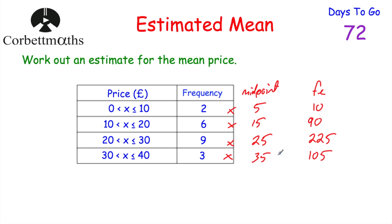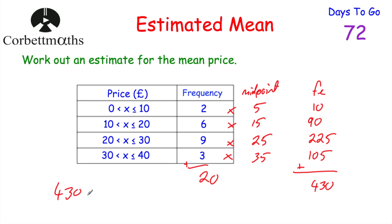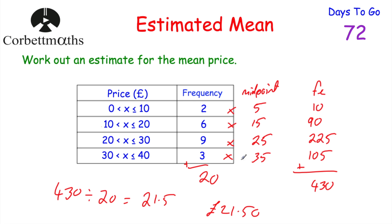Now to find the mean, we add up the FX column to get our estimate for the grand total: 10 plus 90 plus 225 plus 105 equals 430. Then we divide by the total frequency: 2 plus 6 plus 9 plus 3 equals 20. So 430 divided by 20 equals 21.5. In this question we're dealing with prices, so our estimate for the mean price of these items is £21.50.